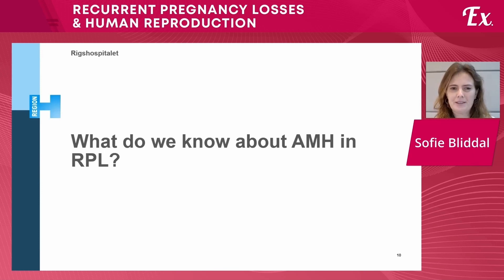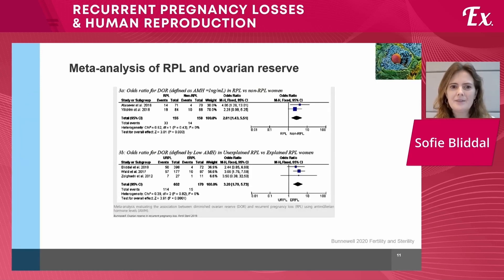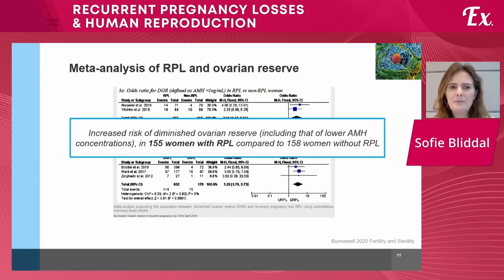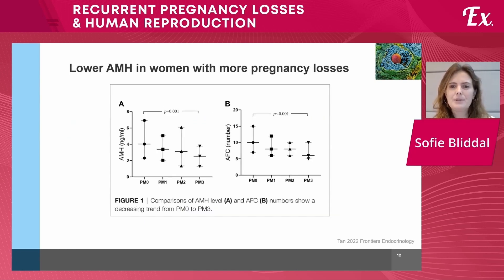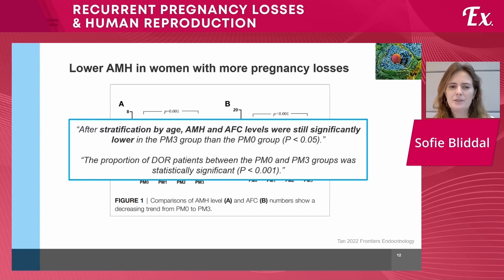What do we know about AMH in recurrent pregnancy loss? From a meta-analysis of very small studies, it was found that in general there is an increased risk of diminished ovarian reserve, including lower AMH concentrations, when comparing 155 women with RPL to 150 women without recurrent pregnancy loss. It was also shown that lower AMH exists in women with more pregnancy losses — comparing those without any losses to those with one, two, or three or more losses, both AMH and the antral follicle count were lower.